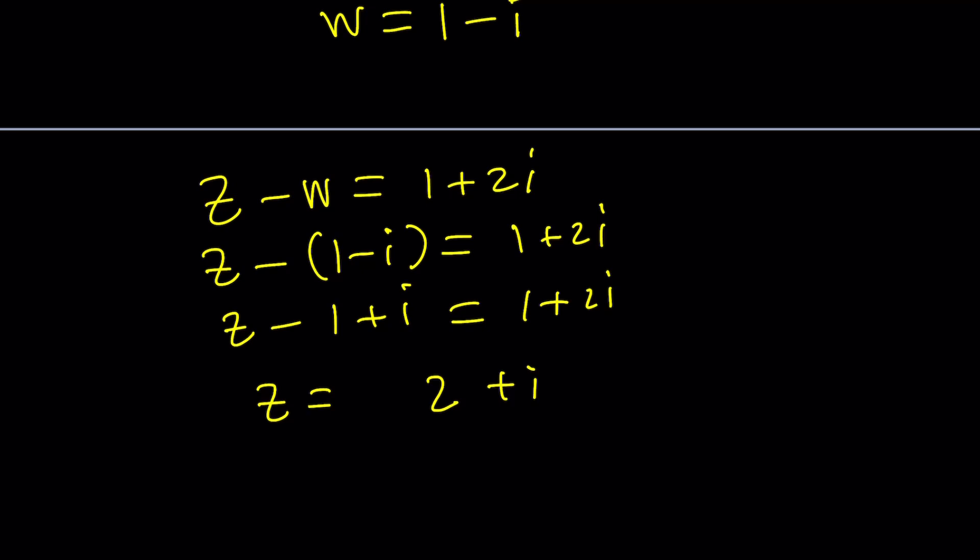You're going to get Z equals 2 plus i. So we got our solutions. W is 1 minus i. Z is 2 plus i. And that basically is it.